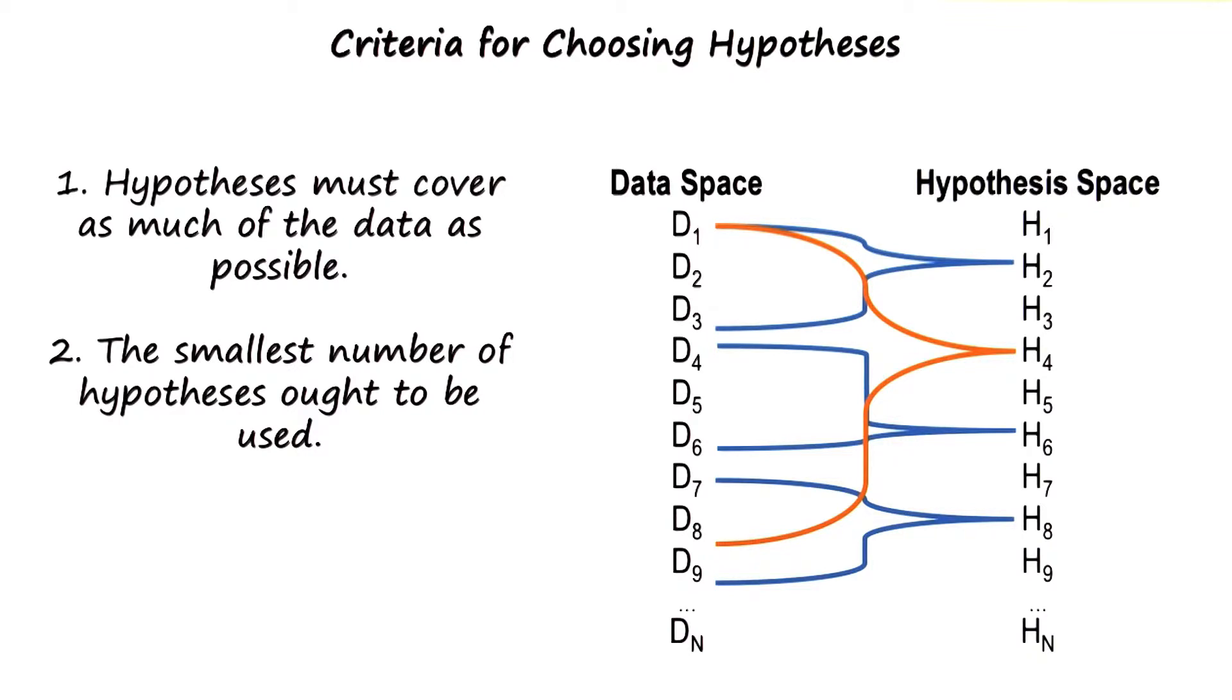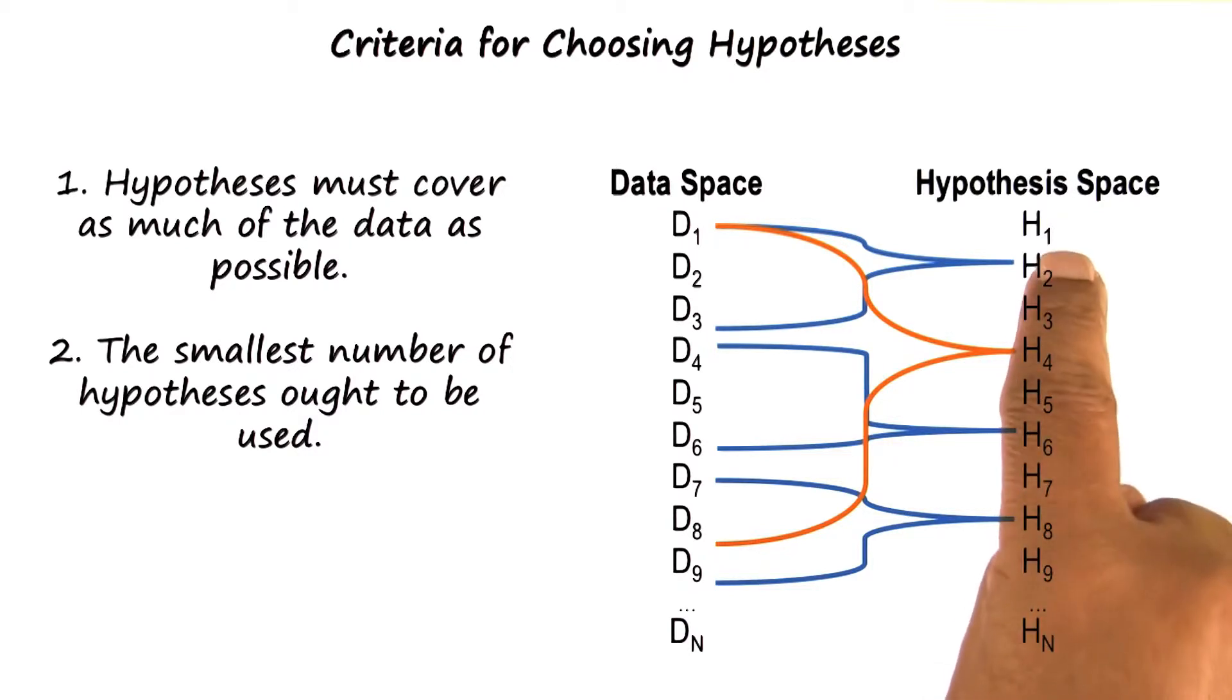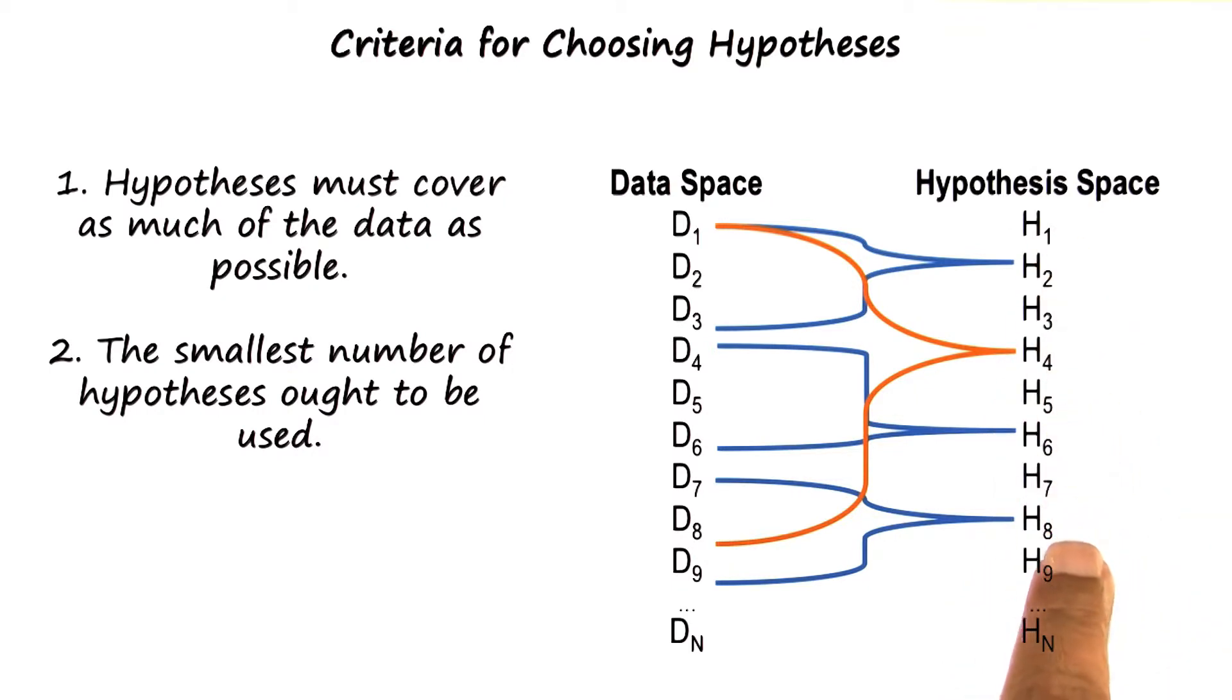Now if we went by the criteria of explanatory coverage, then we might pick H2 plus H6 plus H8, because the three of them combined explain more than just H4. However, the criteria of parsimony would suggest that we pick H4, because H4 alone explains almost all the data and we don't need the other three hypotheses.